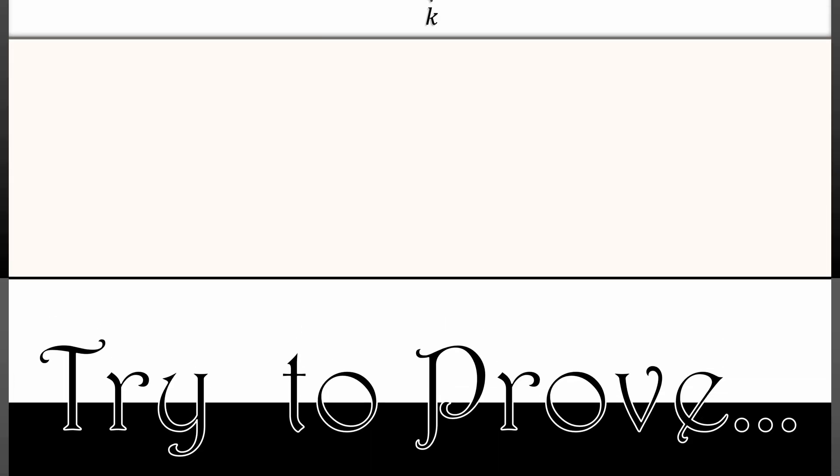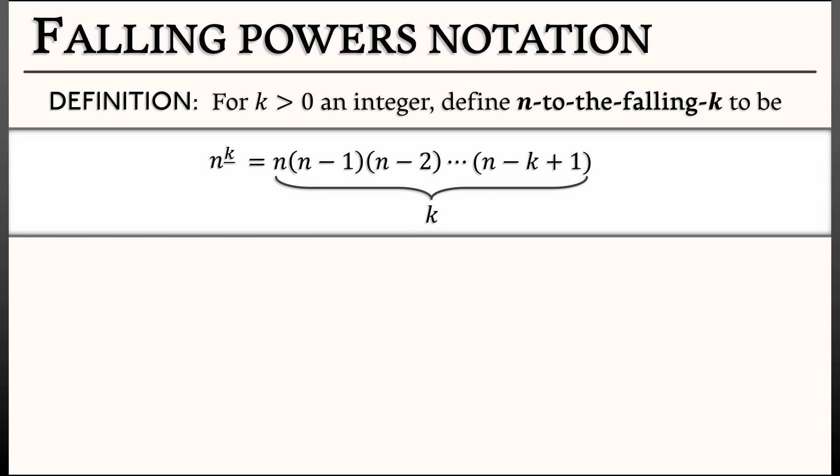Now this definition has a lot of flexibility to it. n doesn't necessarily have to be an integer. We could also say that if k is equal to 0, we're just going to declare n to the falling 0 to be 1. Because n choose 0 is always 1, in the same way that 0 factorial is best when you just declare it to be 1.